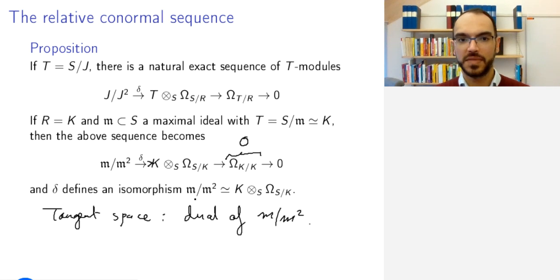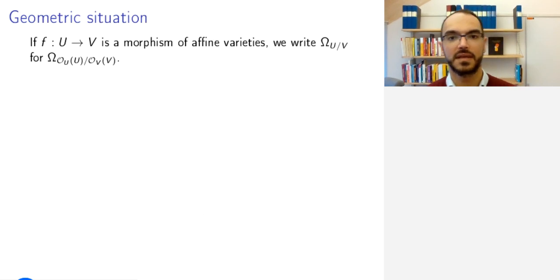We will be looking more at these modules of differentials in a geometric setting. Let me briefly indicate, without much precision, the geometric setting we will be looking at. If we have a morphism of affine varieties, then we can make this construction omega S,R, with S and R the coordinate rings of these affine varieties. And we write that omega U over V for short.